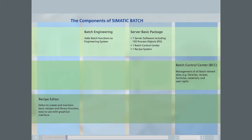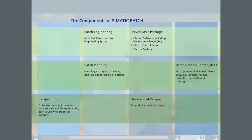Within the context of Simatic Batch, a process object is an instance of a unit or an equipment module. Batch Planning is an option for Batch CC allowing convenient graphical planning of batches. The Hierarchical Recipes optional package allows users to formulate hierarchical recipes as described in the ISA standard ISA 88. The option is installed on batch servers; without this package you can create flat recipes.